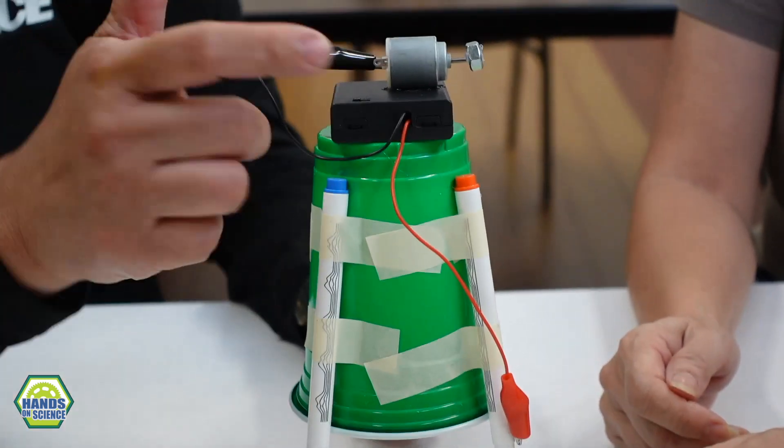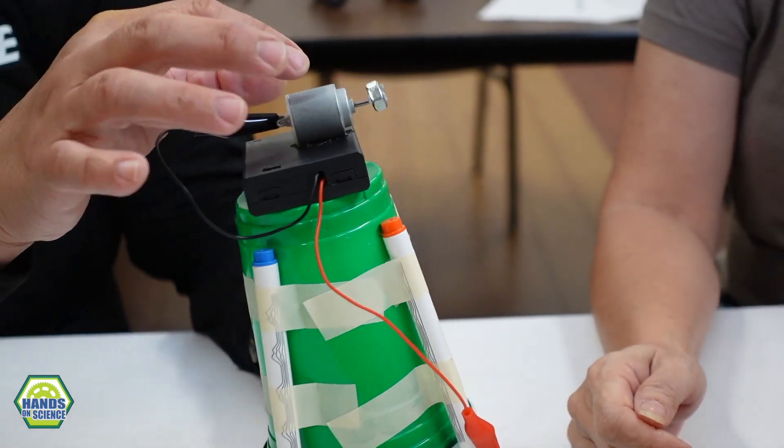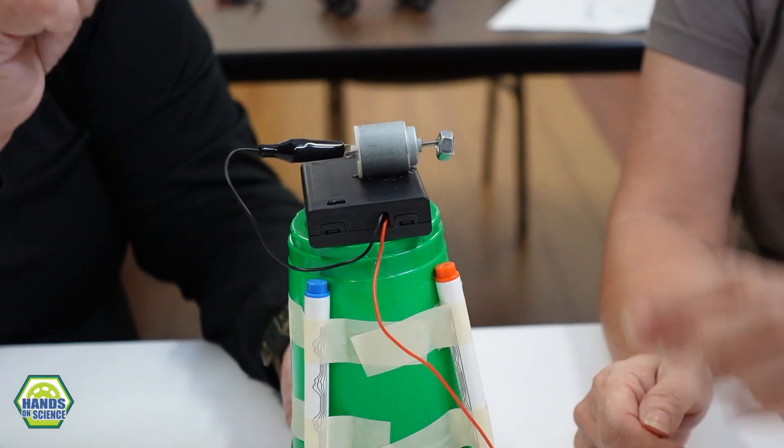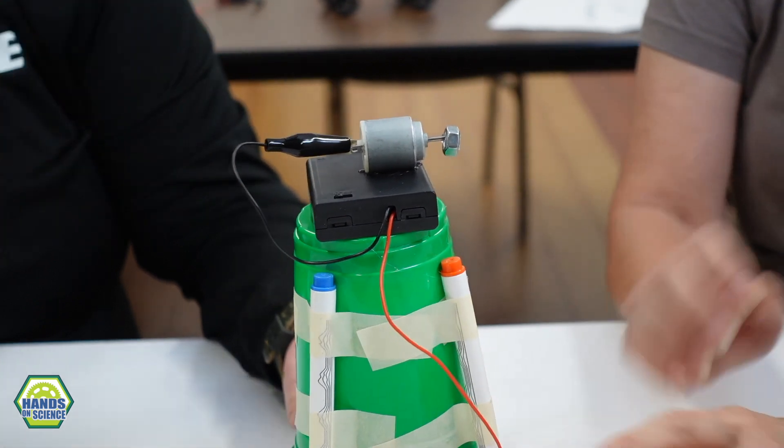And so this battery pack is left over from a different project and I have this little motor that I have a hex nut on here. Which you glued on, right? And the hex nut is not centered so when I turn the motor on it's gonna vibrate.